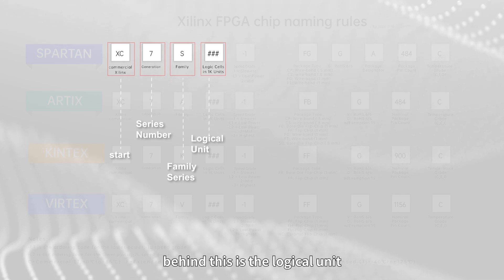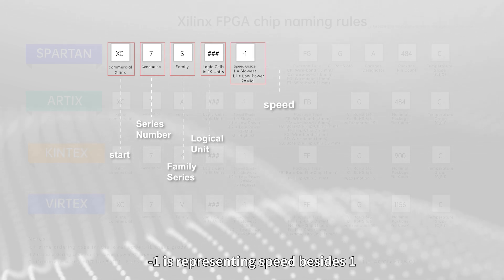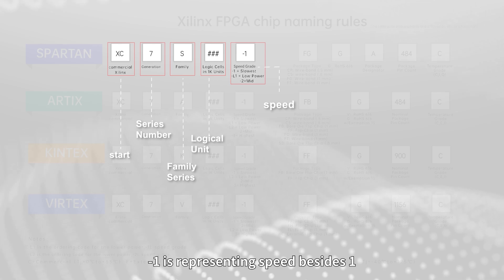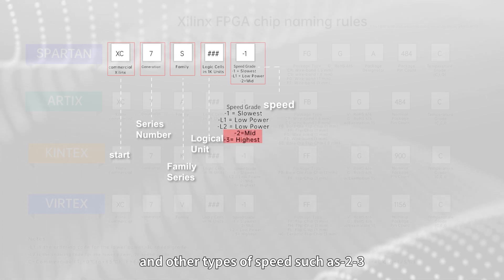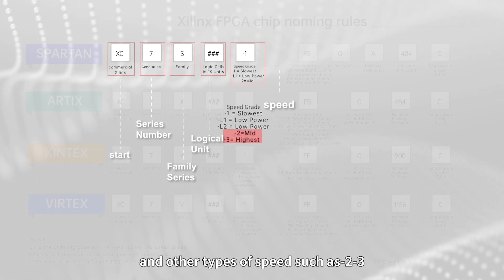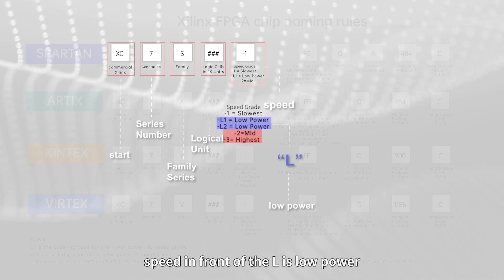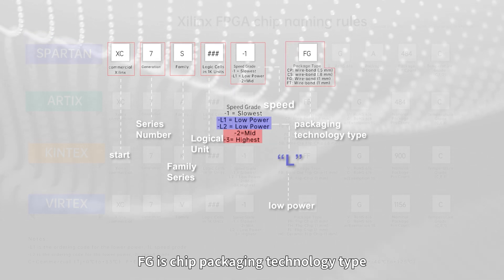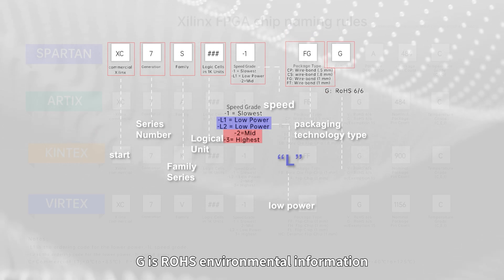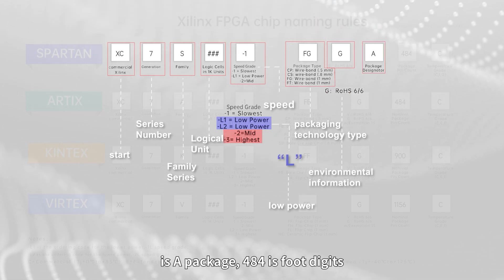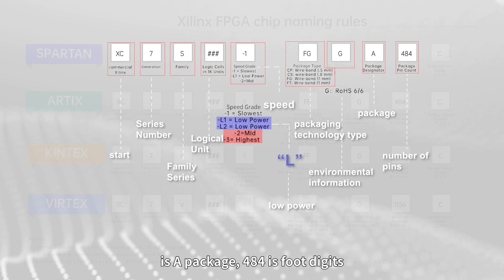Behind this is a logical unit number. The suffix '-1' represents speed — a larger number such as '-2' or '-3' indicates another speed grade. An 'L' prefix before the speed grade indicates low power. 'FG' is the chip packaging technology type. 'G' is the RoHS environmental information, and '484' is the pin count.